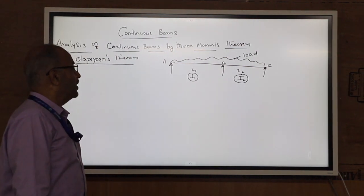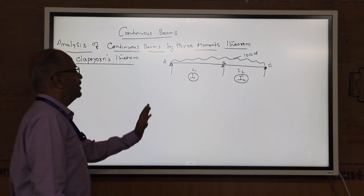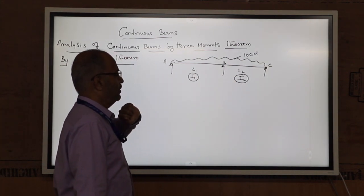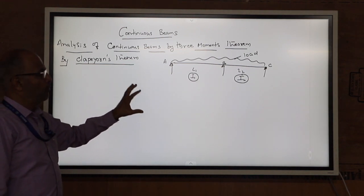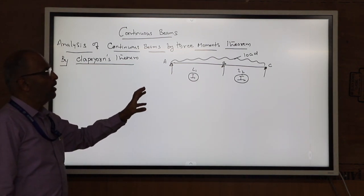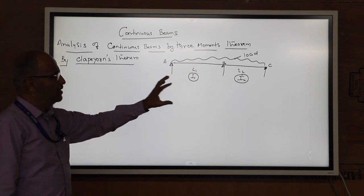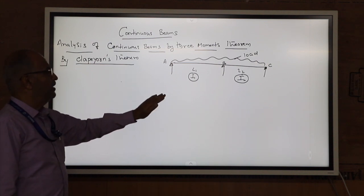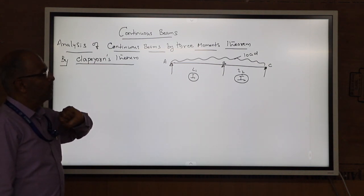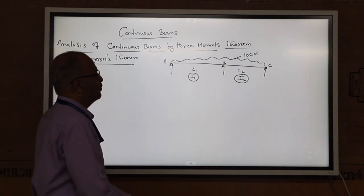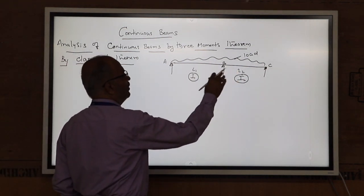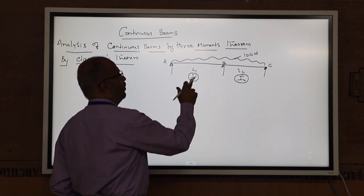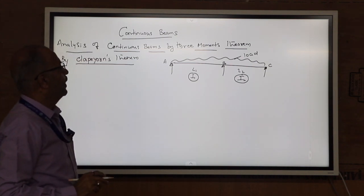Let us take one such continuous beam with spans A-B and B-C. This Clapeyron's theorem is applicable for two spans, and if you want to extend the application it can be applied further, as we will see later. Let us consider a continuous beam of two spans A-B and B-C, with span AB as L1 and span BC as L2, having moments of inertia I1 and I2 respectively.